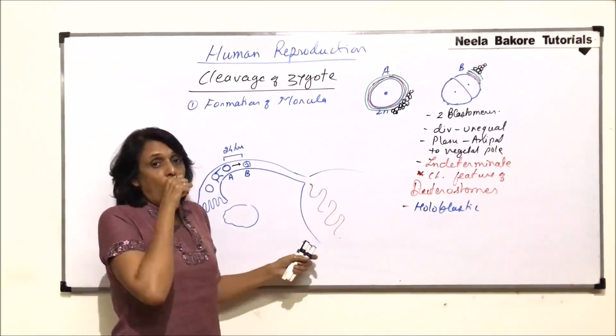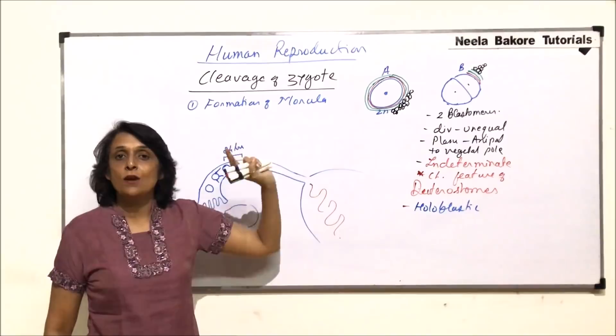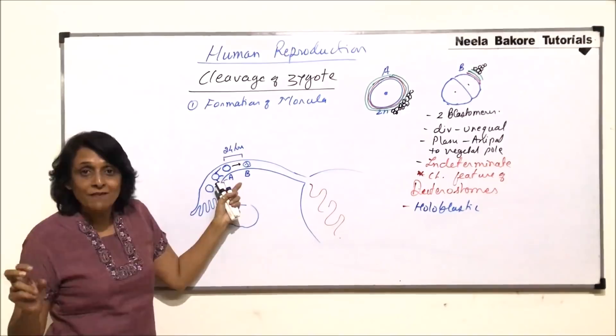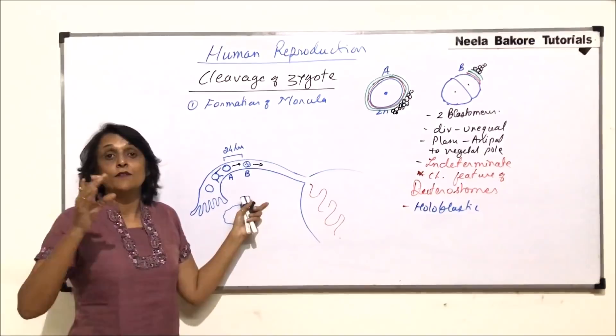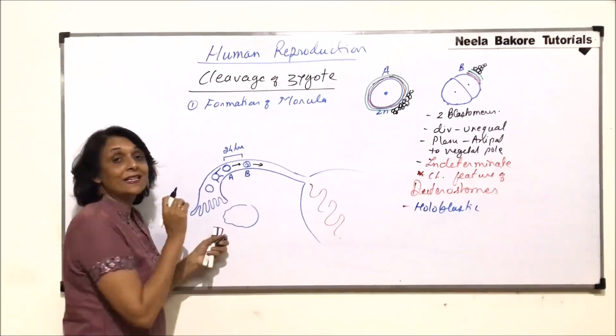All the layers outside the egg are as they are — that means the vitelline membrane, zona pellucida, and corona radiata, everything. The zygote which has now started to divide is still in the fallopian tube and it is moving towards the uterus. The next division again takes place after a few hours — again, almost 24 hours.